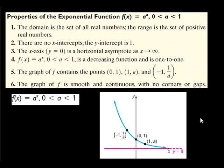And that's really what we found. As x approaches infinity, it gets really, really close to the x-axis but it'll never reach it. This is a decreasing function. When we graphed f(x) = (1/2)^x, the points (-1, 2), (0, 1), and (1, 1/2) are all on that graph.